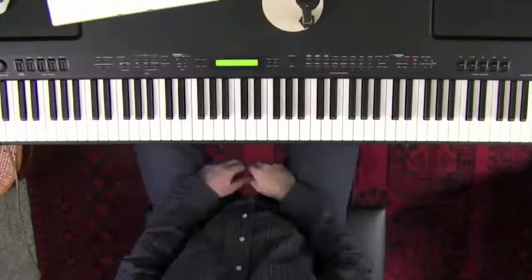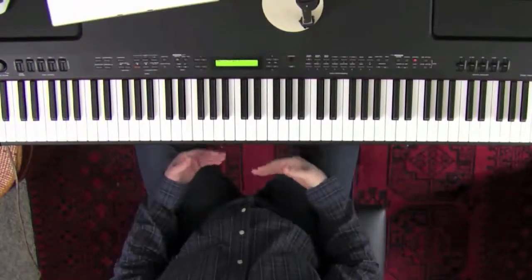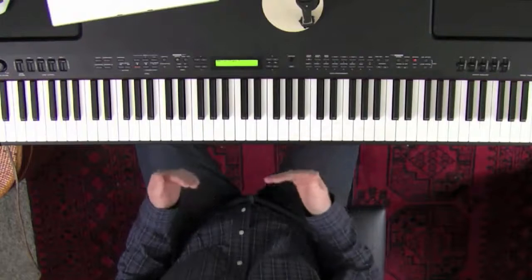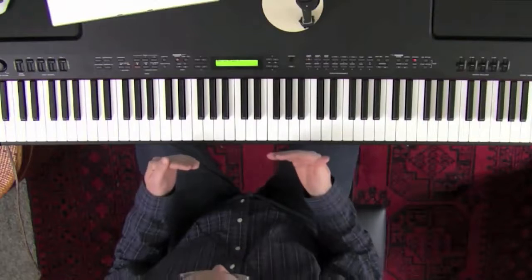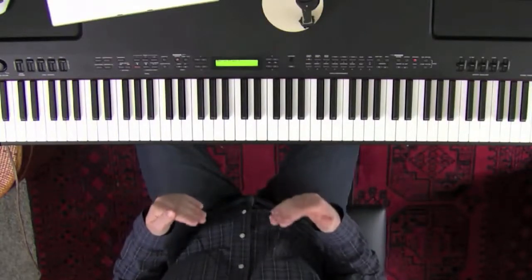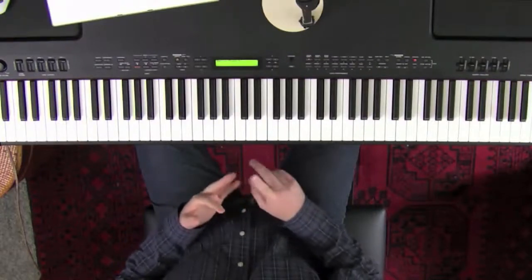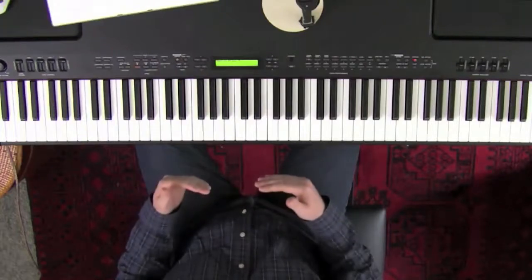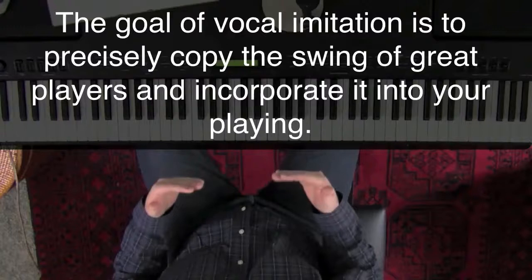So let me say a little something about the end game here. We've been talking about learning how to vocalize and incorporating that into your playing. The end game is to be able to vocally mimic great horn players, great swing players, great solos, and incorporate Charlie Parker's swing, for instance, into your own playing.